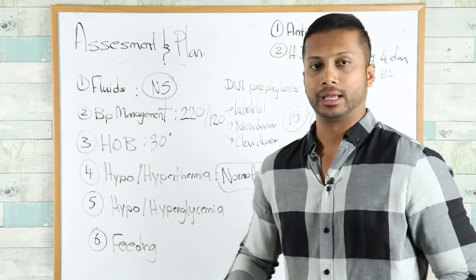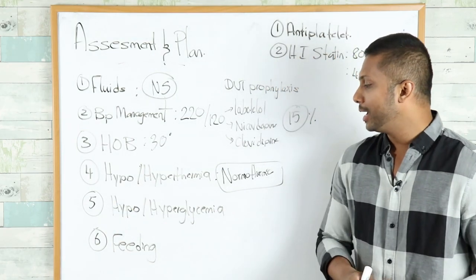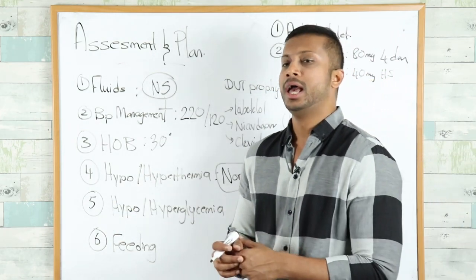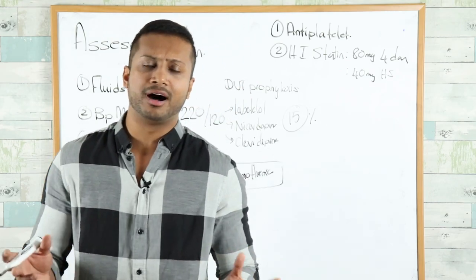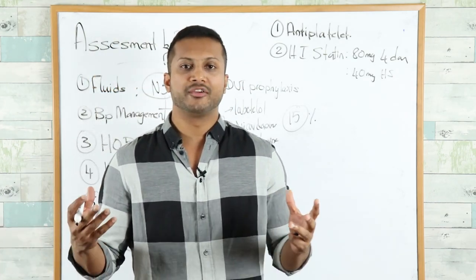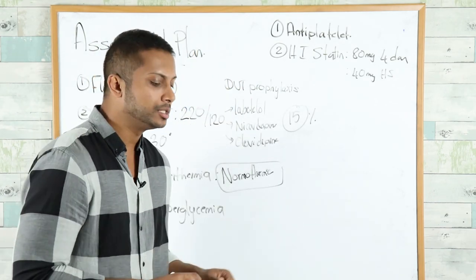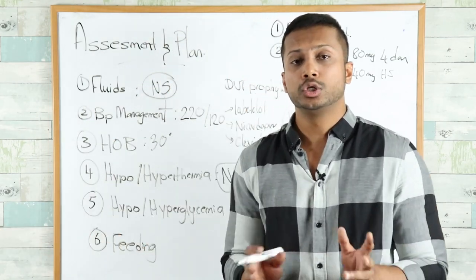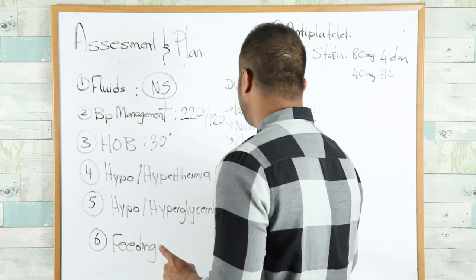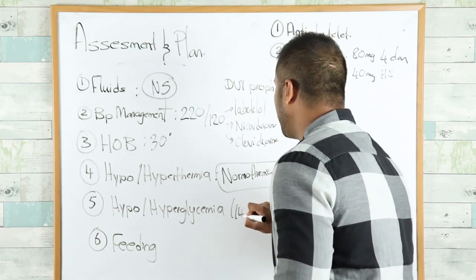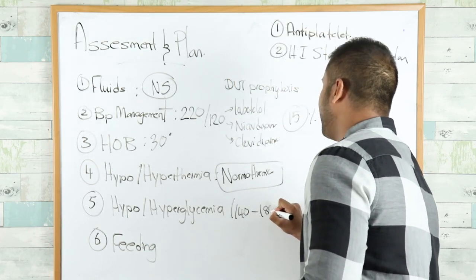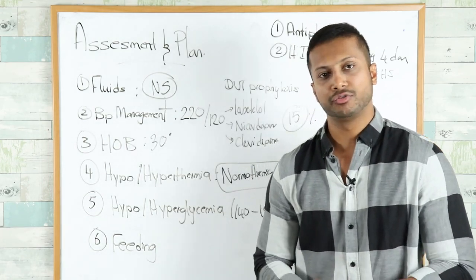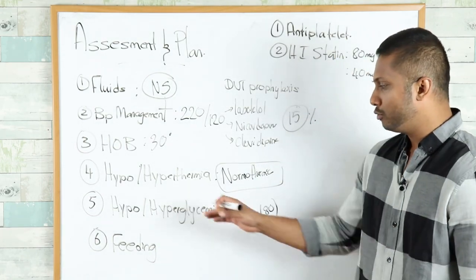Number five: hypoglycemia and hyperglycemia. The brain and heart really depend on a lot of nutrition. Hypoglycemia is bad, but hyperglycemia is also bad. You want to make sure the patient's blood sugar lies somewhere between 140 to 180. This is a safe range for all practical purposes.